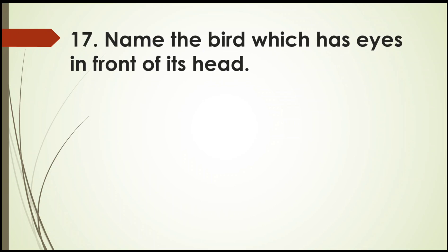Next. Name the bird which has eyes in front of its head. Birds generally have eyes on the sides of their head. But this bird has eyes similarly like humans in front of its head. Options: Ostrich, Owl, Eagle, or Hen. All must have seen the owl. Its both eyes are in front. And one more interesting thing about owl. It can move its neck all the way back. Its neck is very flexible. So right answer is owl.